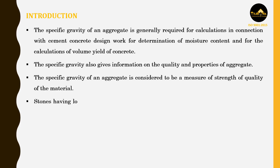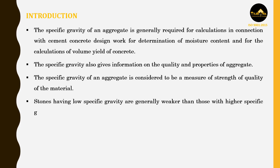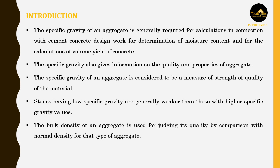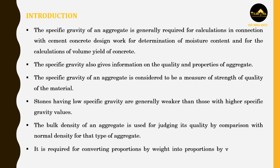Stones having low specific gravity are generally weaker than those with higher specific gravity values. The bulk density of an aggregate is used for judging its quality by comparison with normal density for that type of aggregate. It is required for converting proportions by weight into proportions by volume, and is used in calculating the percentage of voids in the aggregate.